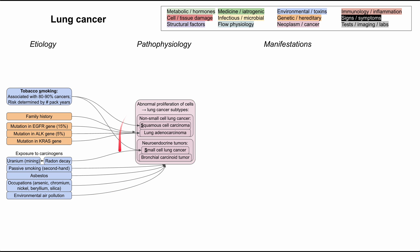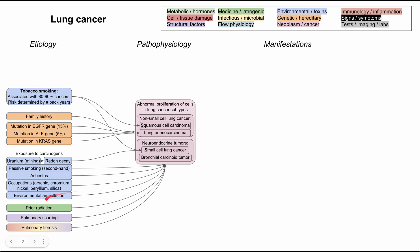All of those can generally predispose you to lung cancer. Prior radiation can predispose you as well, as can pulmonary scarring or pulmonary fibrosis from a variety of etiologies — inflammatory, infectious, or structural. Chronic pulmonary infections like tuberculosis or HIV leading to PCP pneumonia can cause pulmonary fibrosis and can also directly predispose you to lung cancer.